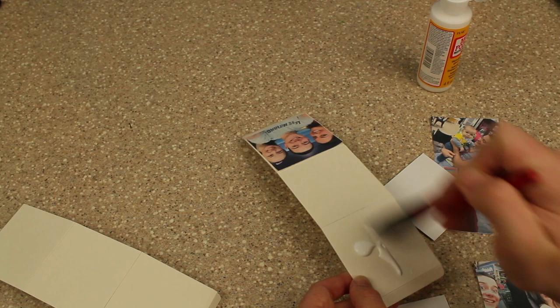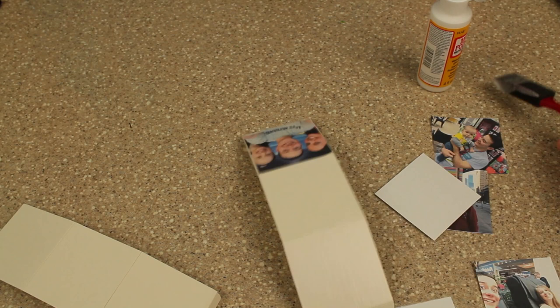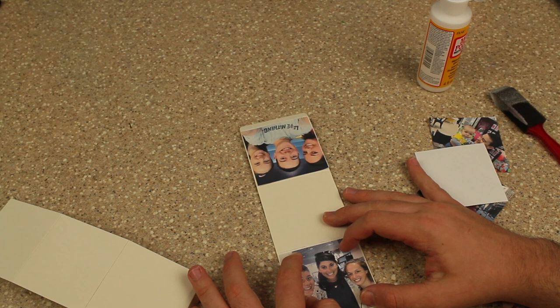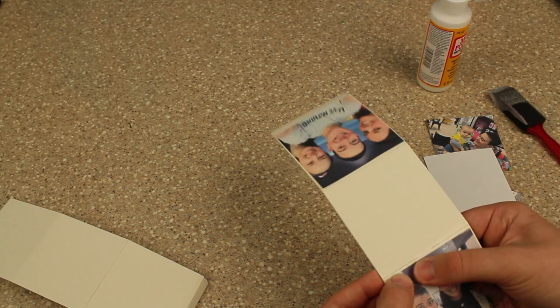I like to use the Mod Podge and put these down before I glue it together because it's easier to apply the adhesive. It's easier to make sure that they're nice adhered down. So I'm taking all these pictures. I just cut my pictures out or printed them out using cardstock. Nothing fancy. I used my home printer and I think they turned out fairly well.